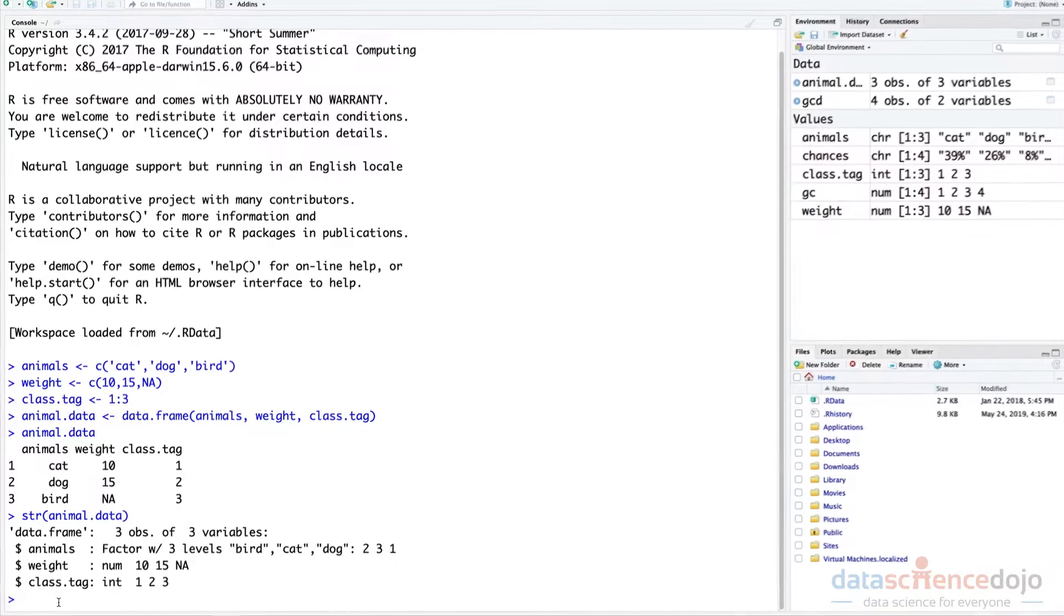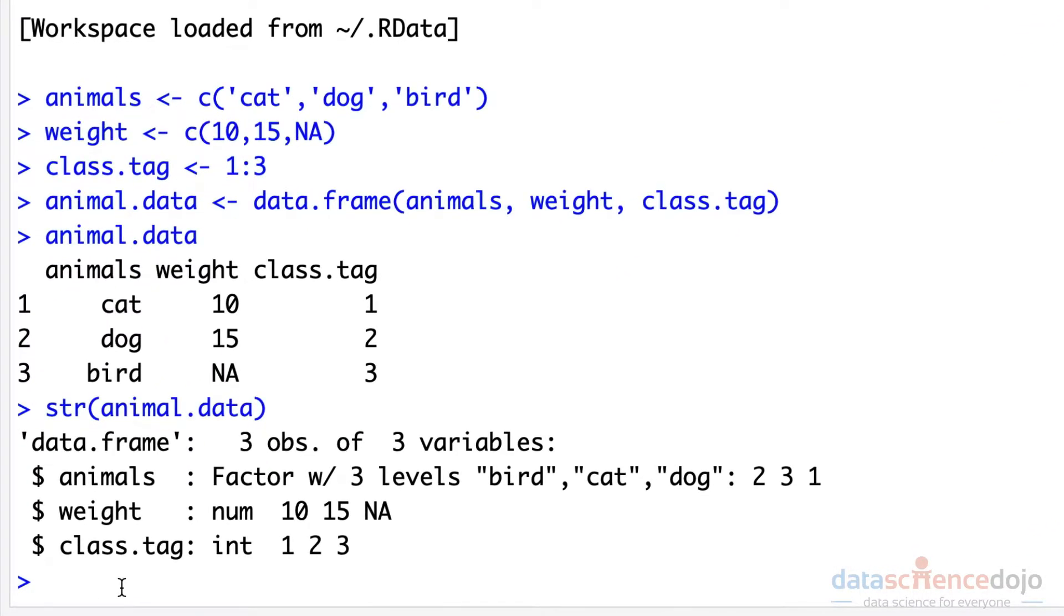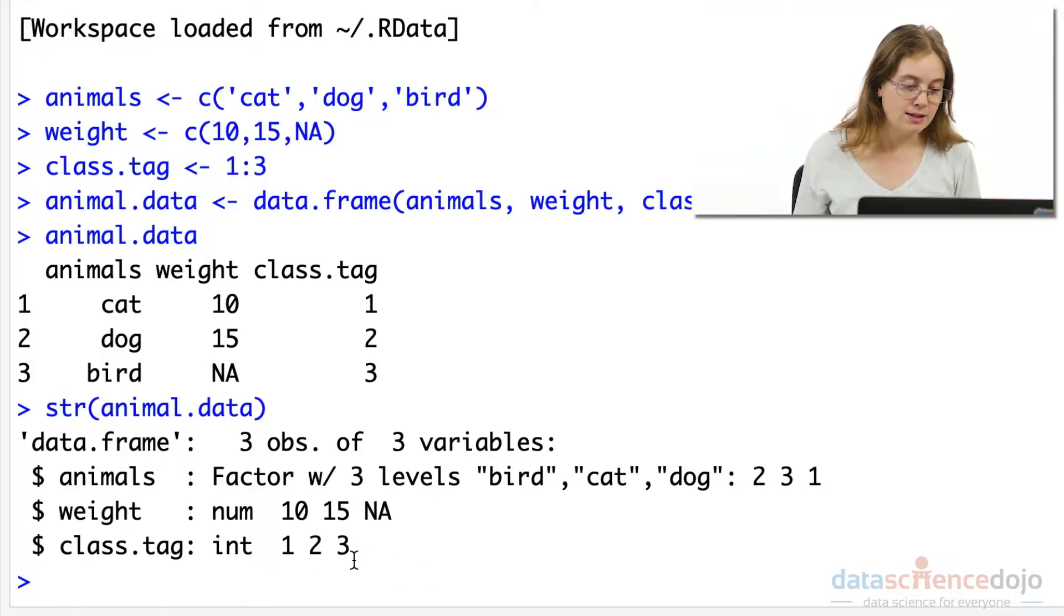If we have a look at the structure of our animal data frame we created in the video on vectors, we can see it includes three vectors here: animals, weight, and class tag. If we look closely at class tag, we can see that this has been treated as an integer number when it is in fact a class represented as a number or tagged as a number class.